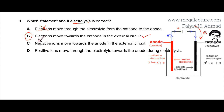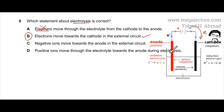Let's also look at the other options. Option C states that negative ions move towards the anode in the external circuit. As you can see, the negative ions are attracted towards the anode, but not in the external circuit — they move towards the anode inside the solution, not the external circuit. So that statement is incorrect.